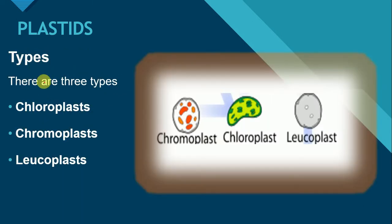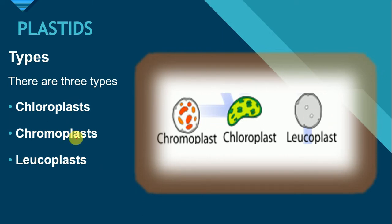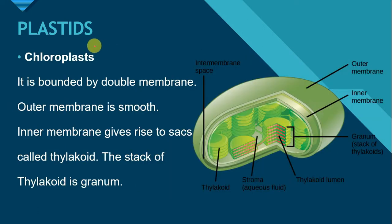There are three main types of plastids. These types depend on the type of pigment present in them: Chloroplast, Chromoplast, and Leukoplast. Chloroplast contains a green color pigment, while Chromoplast contains pigments of different colors, and Leukoplast contains colorless pigments that are not visible. Let us discuss each one in detail.